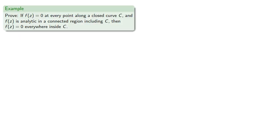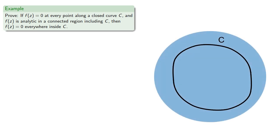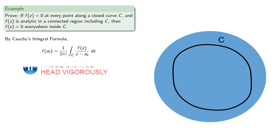As a simple example, suppose f of z is 0 at every point along a closed curve C, and f of z is analytic in a connected region including C, then f of z has to be 0 everywhere inside our closed curve. By Cauchy's integral formula, f of z0 is...